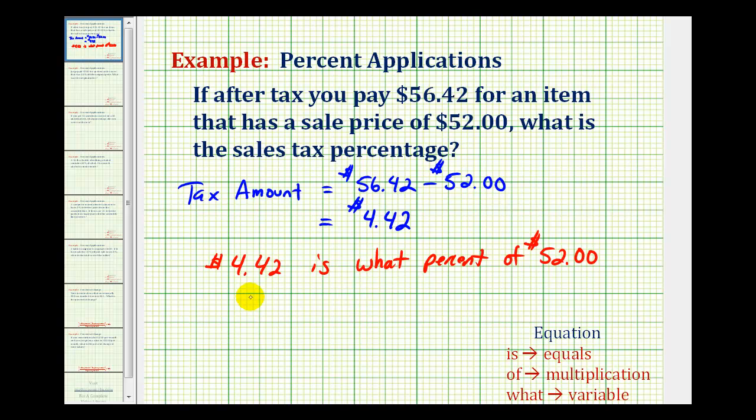Now let's translate this into a percent equation using the keywords. So we have 4.42 is means equals what, what number, or what percent represents the unknown. Let's use p for our variable.